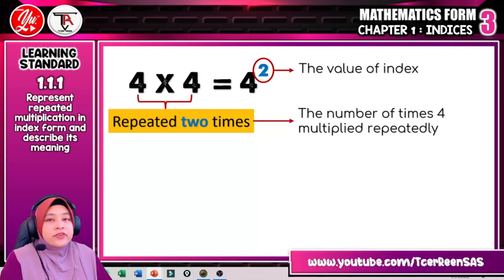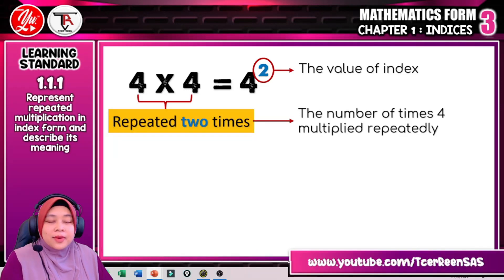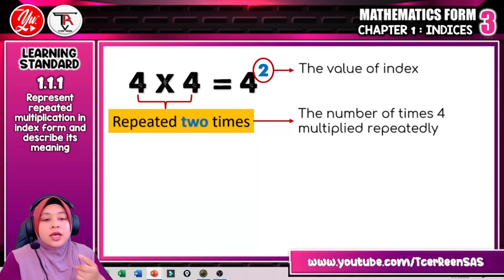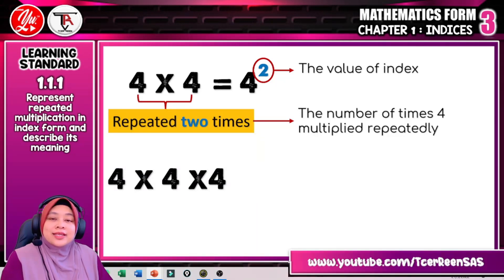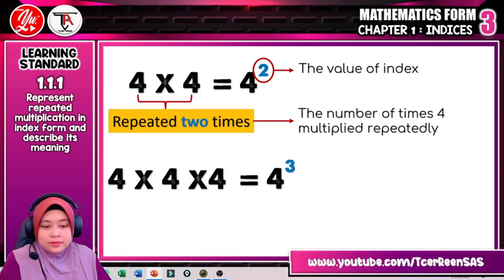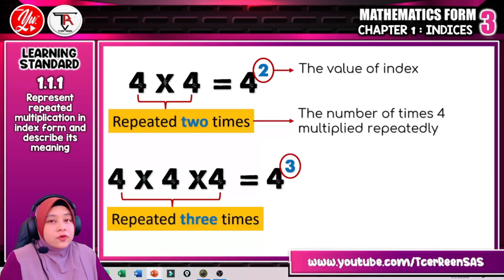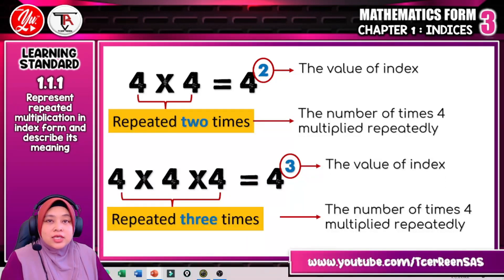So here we can see that the value of the index is the same as the number of times 4 is multiplied repeatedly. That means 4 times 4 — 4 is multiplied 2 times — is equal to the index value of 4, which is 2. When we write 4 to the power of 2, it means 4 is used 2 times. Similarly, 4 times 4 times 4 is 4 to the power of 3, because 4 is repeated 3 times. The value of index 3 is the same as the number of times 4 is multiplied repeatedly, which is 3.